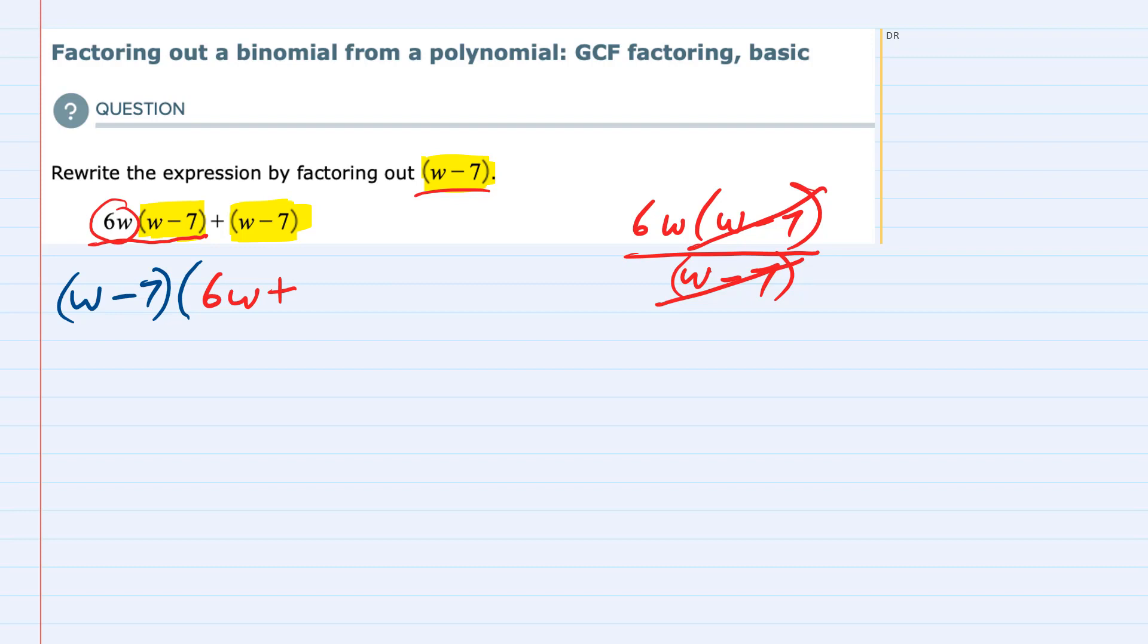Just as before, I'm going to start with what I have inside, which is the (w - 7), and then I'm going to write underneath that the term that I'm factoring out, which is (w - 7). And when we have both the numerator and the denominator exactly the same, they cancel, but keep in mind that they cancel to 1.